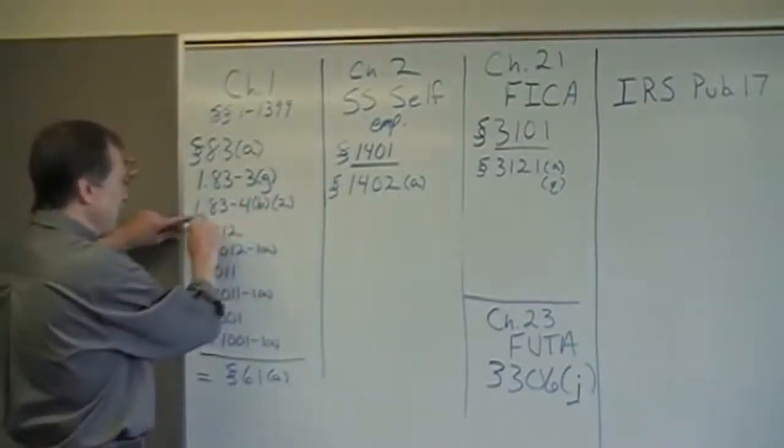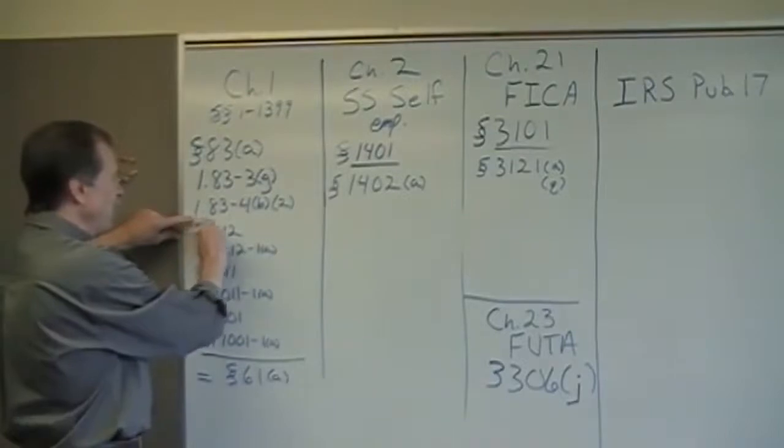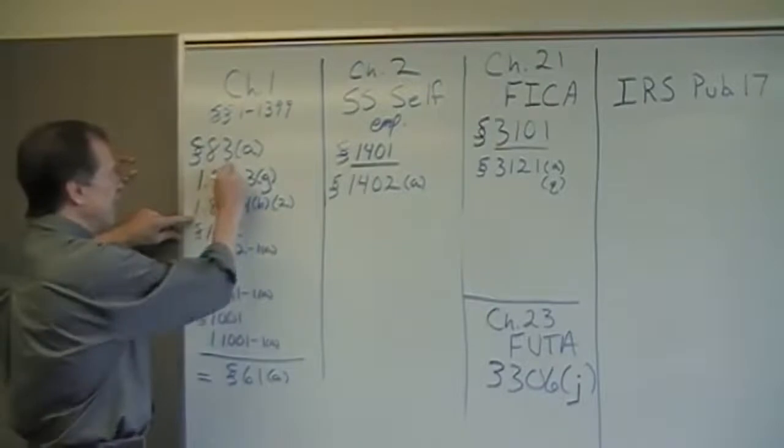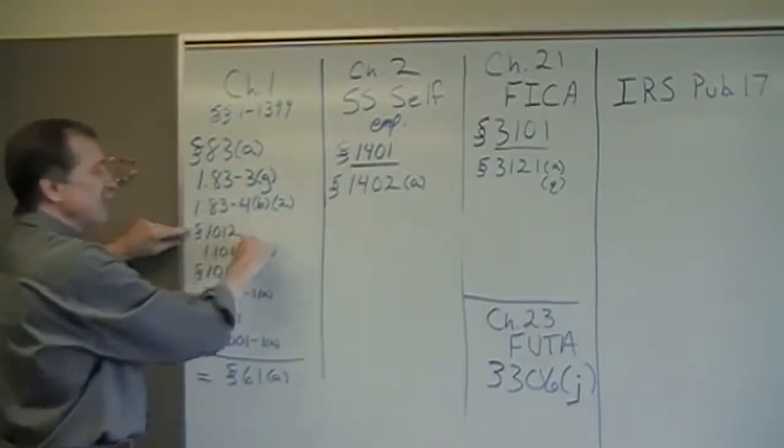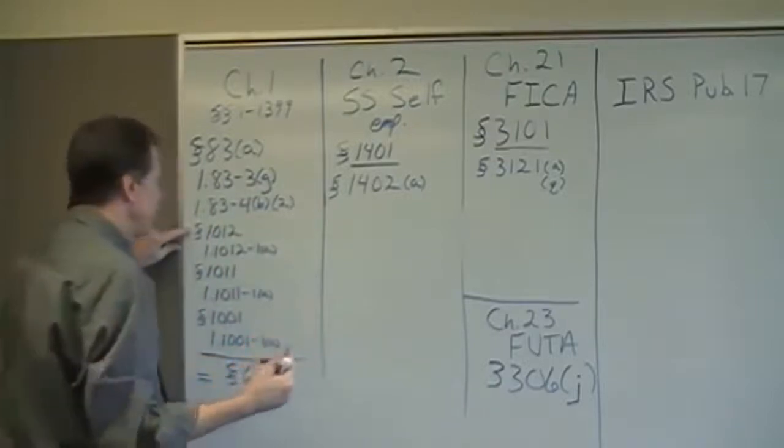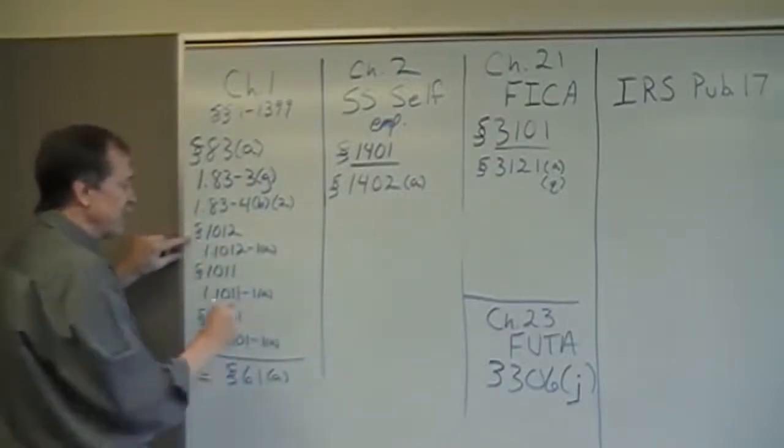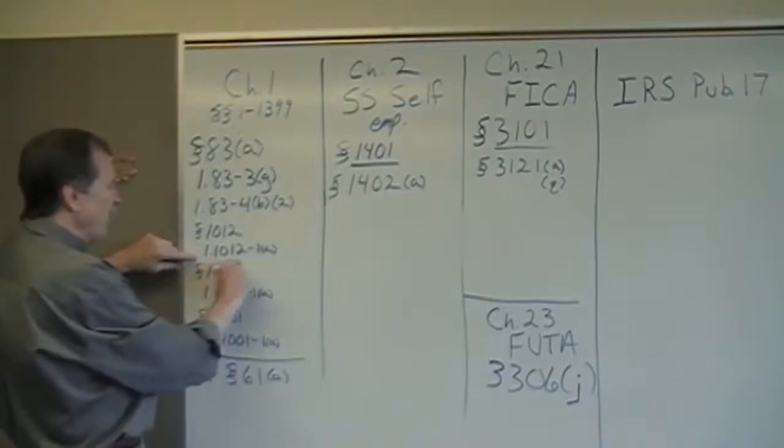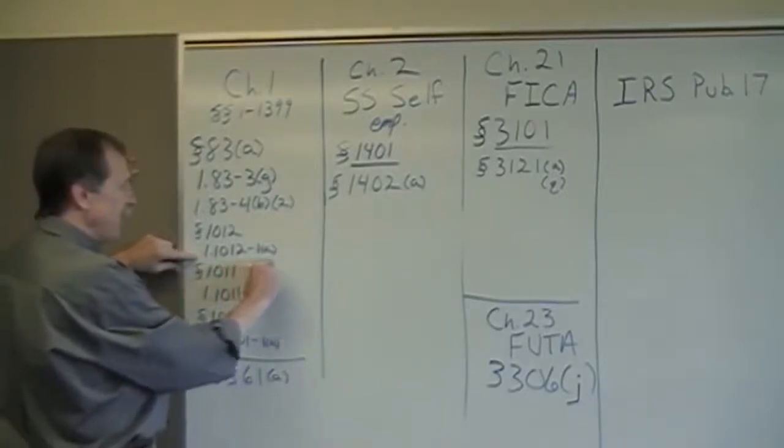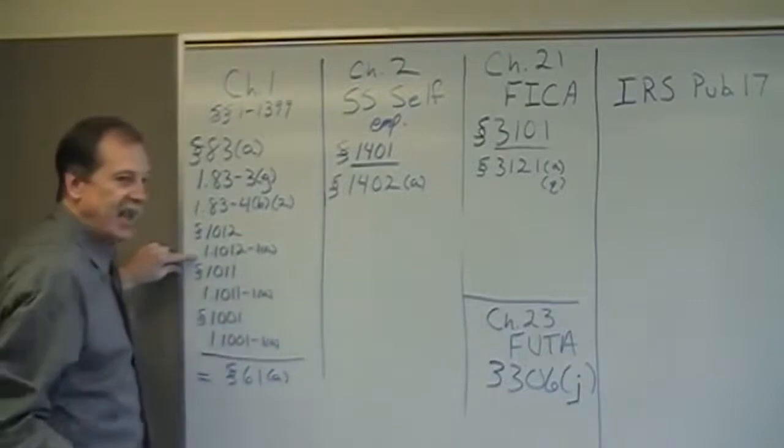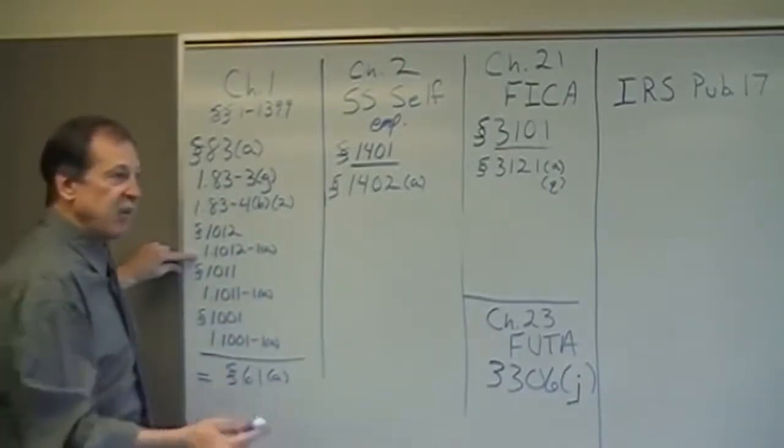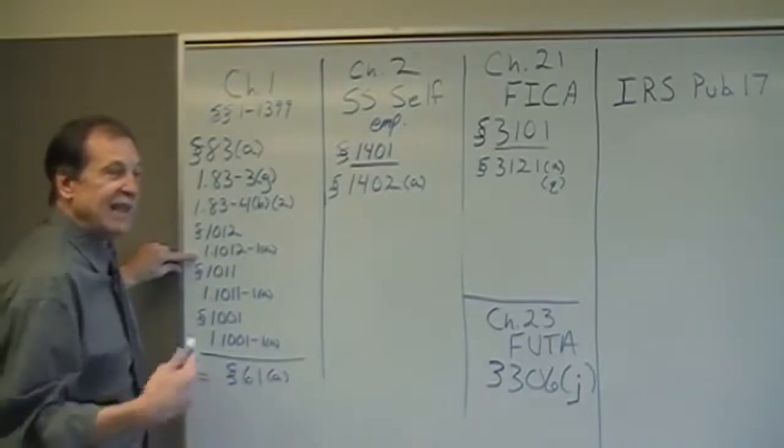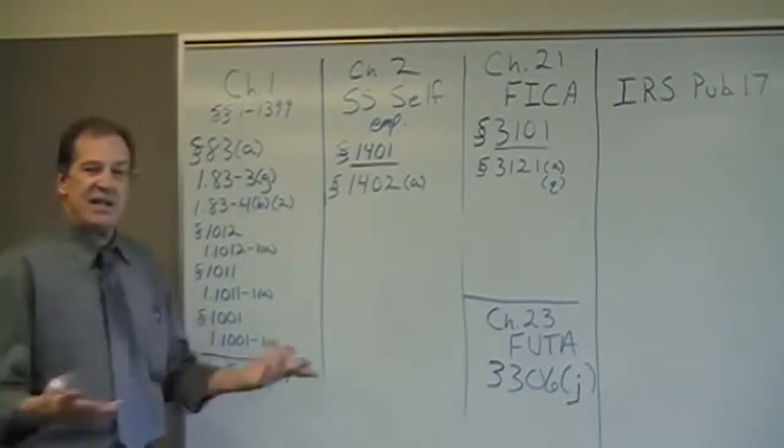1.83, decimal point, that means it's a regulation. 1.83-4b2, written under Section 83 of the tax code by the Secretary of the Treasury here, says to figure your cost of the property you receive for your services, you can apply Section 1012 of the regulations thereunder. 1.012-1A, a regulation thereunder, says your cost is cash or other property. Get to the part where labor is excluded. It doesn't get to that part.